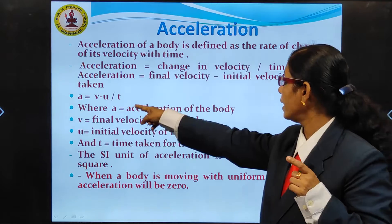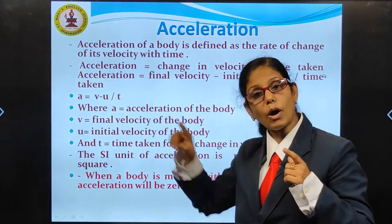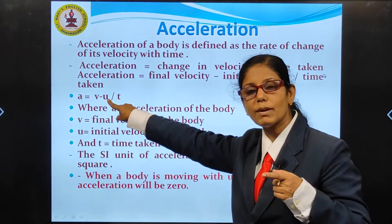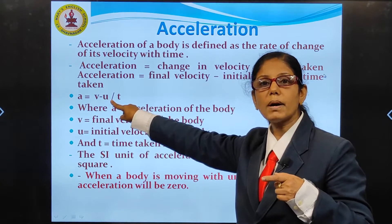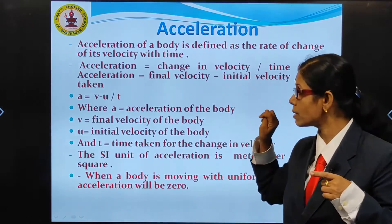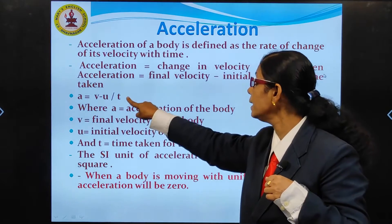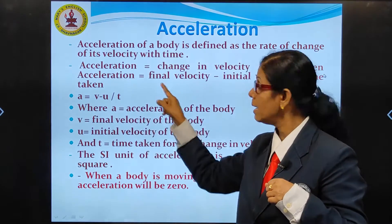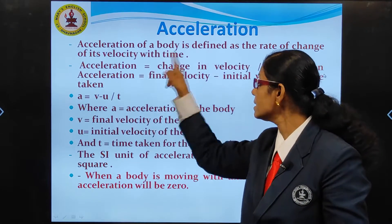If we represent final velocity of the body by V and initial velocity by U, then change in velocity is final velocity minus initial velocity, that is V minus U. So acceleration A equals V minus U divided by time taken T. Here A is acceleration, V is final velocity, U is initial velocity, and T is time taken.